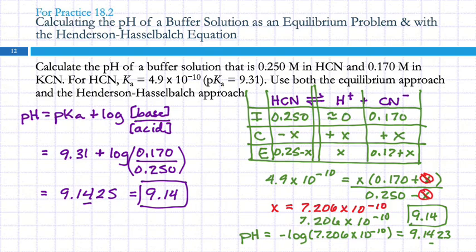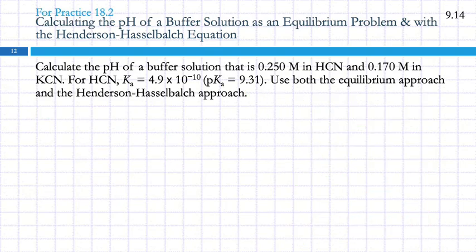If you can remember the Henderson-Hasselbalch equation, or if your instructor gives it to you on the useful information page, then you can just plug numbers in and there's less thinking. But if you don't have that available, you could always solve it with the equilibrium approach. The answer is 9.14.